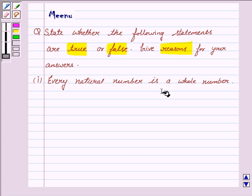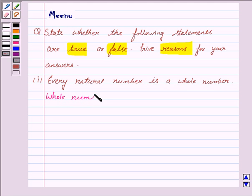The first statement is, every natural number is a whole number. So let us first understand what are whole numbers and what are natural numbers. The whole numbers start from 0, 1, 2, 3 and so on.